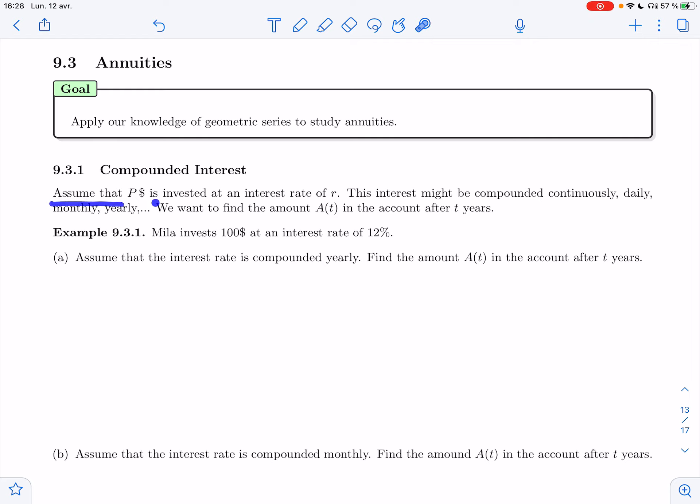So let's start with compounding interest, compounded interest. Assume that P dollars is invested at an interest rate of R. This interest might be compounded continuously, daily, monthly, yearly, etc. We want to find the amount A(t) in the account after t years. So that's the goal of that section.